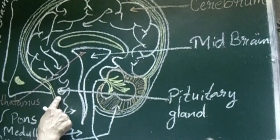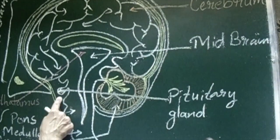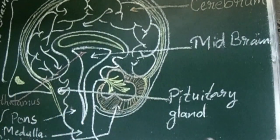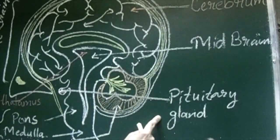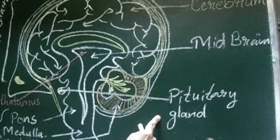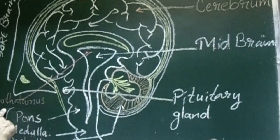So many secretions are taking place from pituitary gland only. So pituitary gland controls all other glands hence it is called the master gland. But this pituitary gland is controlled by which one? It is controlled by hypothalamus.